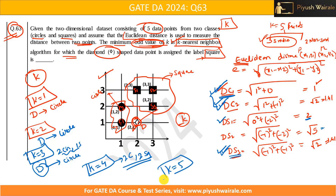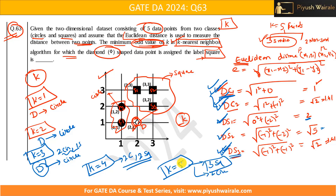When k = 5, we consider all 5 nearest neighbors. Out of these 5 data points, 3 belong to the square class and 2 belong to the circle class. The majority is square, so D is assigned to the square class. Therefore the answer is k = 5.